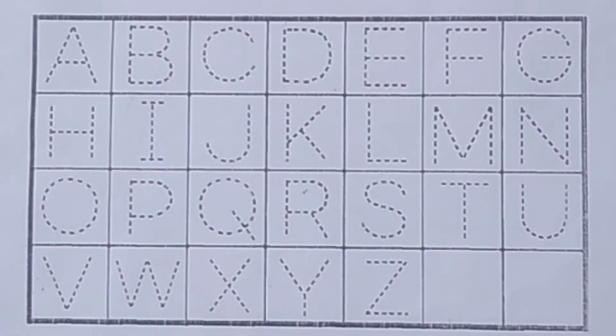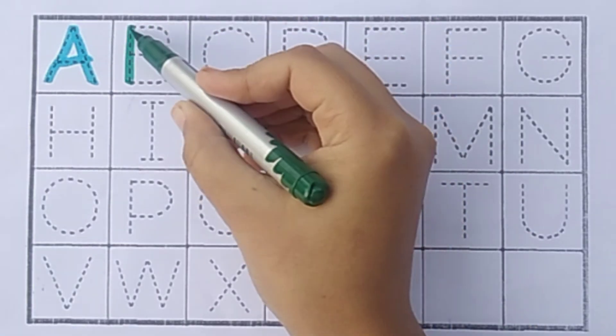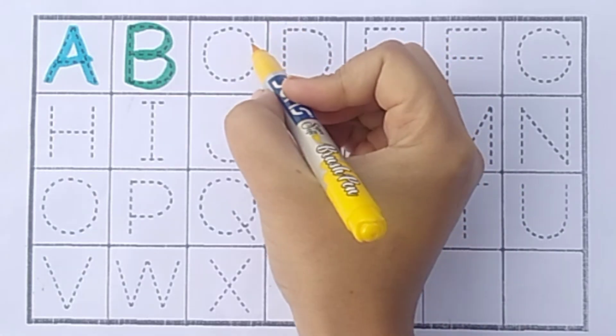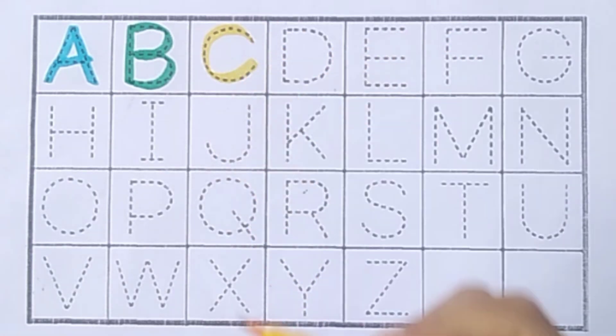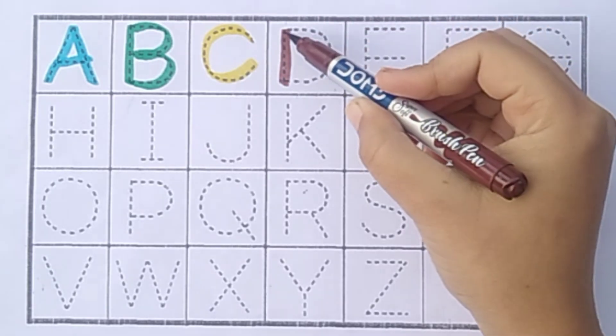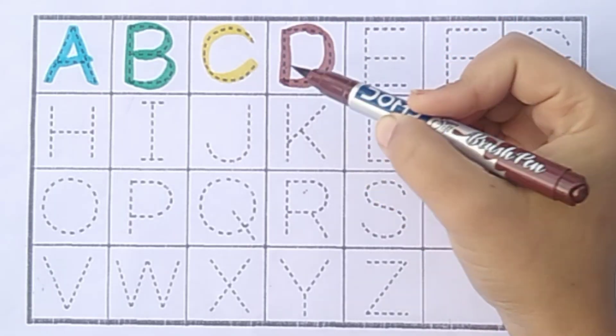Now we learn ABC. Sky blue color, A A for apple. Dark green color, B B for bat. Yellow color, C C for cat. Brown color, D D for duck.